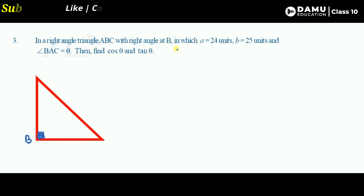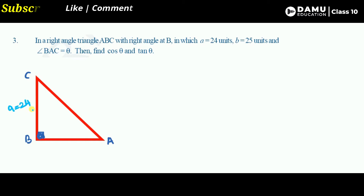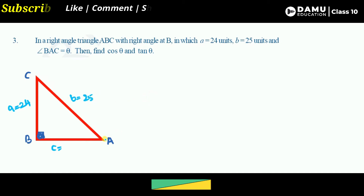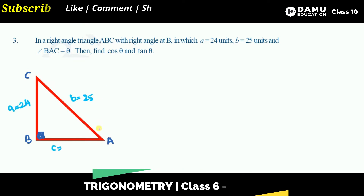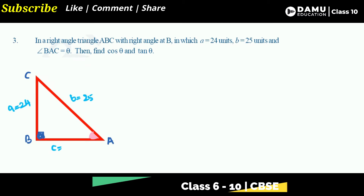In right angle triangle ABC, small a equals 24 units. Small a is the side opposite to angle A, so BC = 24 units. Small b is the side opposite to angle B, so AC = 25 units. Angle BAC is equal to theta.